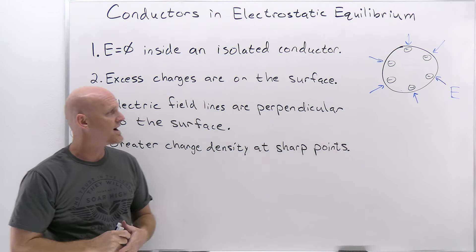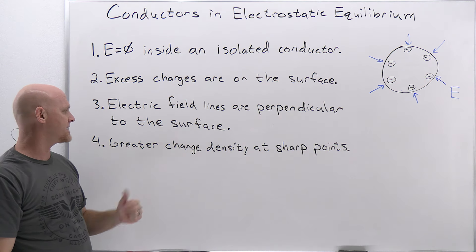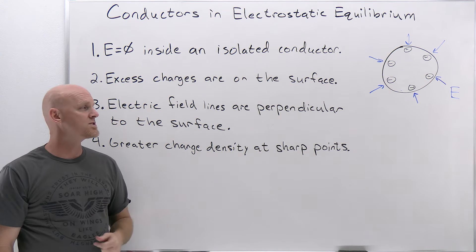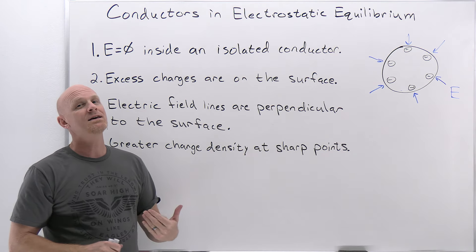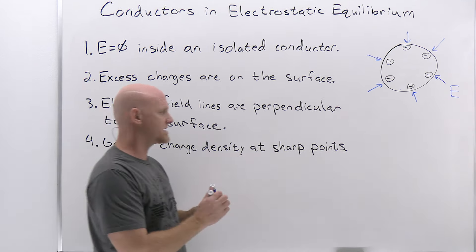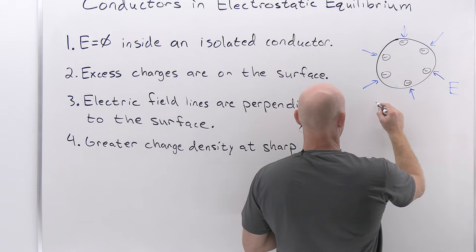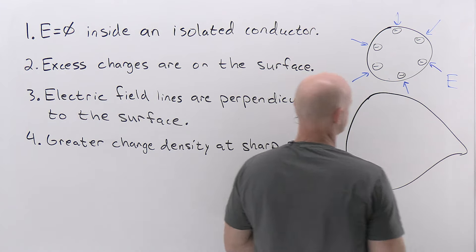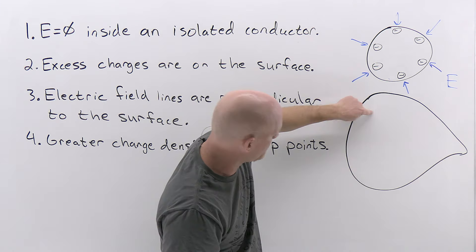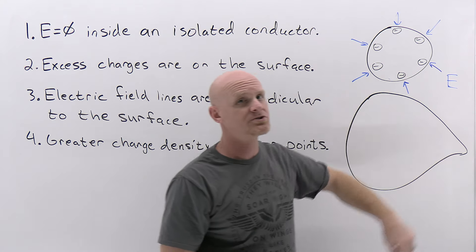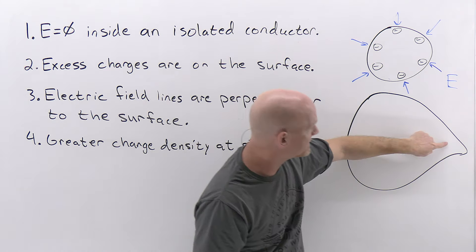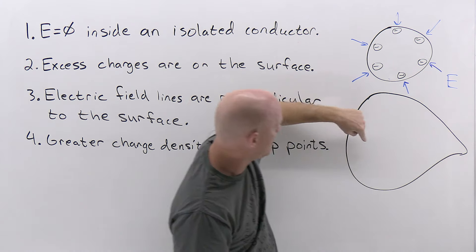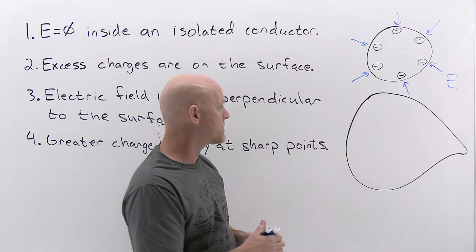Now for the last rule — greater charge density at the sharp point, the point with the smallest radius of curvature, for an irregularly shaped conductor. Let's draw an irregularly shaped conductor. On one side we have a rather large radius of curvature, and on the other we have a rather small radius of curvature. Rule four says we're going to see greater charge density — pooling up of the excess charges — at the sharp end compared to the larger end.